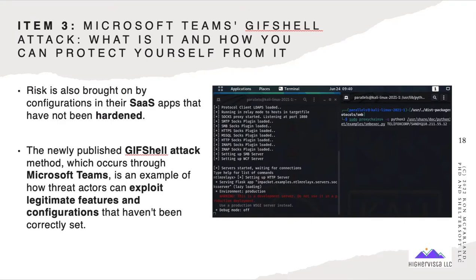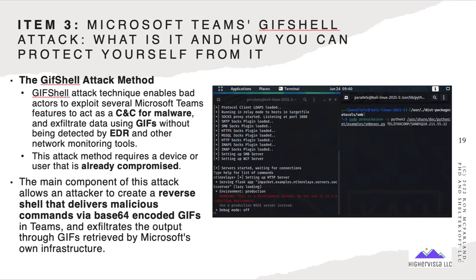Item three: Microsoft Teams GIF shell attack — what it is and how you can protect yourself from it. The risk is also brought on by configurations in SaaS apps that have not been hardened. The GIF shell attack method, occurring through Microsoft Teams, is an example of how threat actors can exploit legitimate features and configurations that have not been correctly set or hardened. The GIF shell attack technique enables bad actors to exploit several Microsoft Teams features to act as a command and control for malware, and exfiltrate data using GIFs without being detected by EDR and other network monitoring tools.